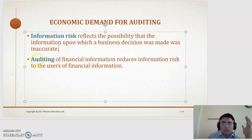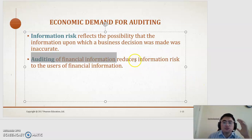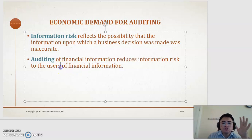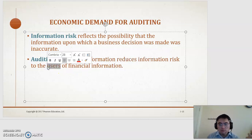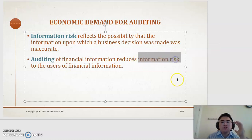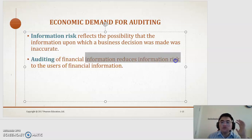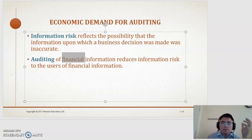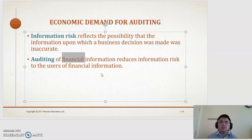That's why auditing of financial information reduces the information risk to the users of financial information. Financial information is used by users, and it will harm those users if there is high information risk. So the auditor's job is to reduce the information risk by auditing the financial statements, so the financial information is not modified and truly properly reflects the economic events. That's why we need an audit — to reduce the information risk.